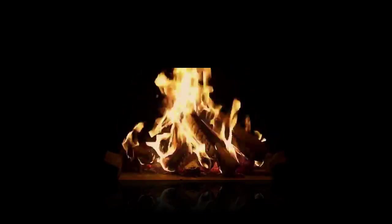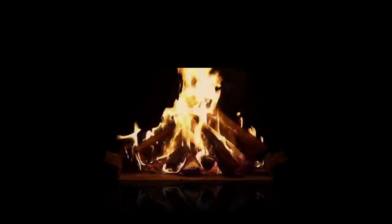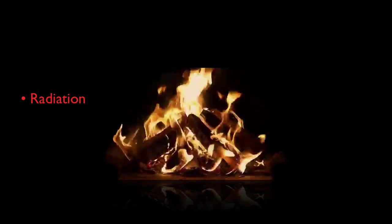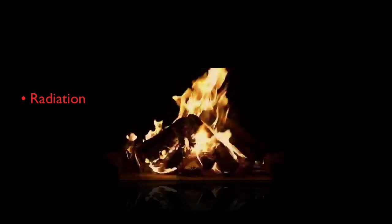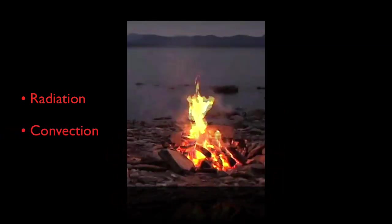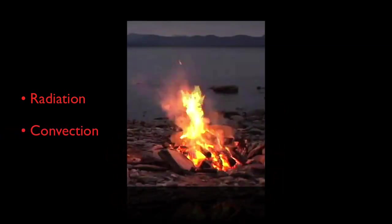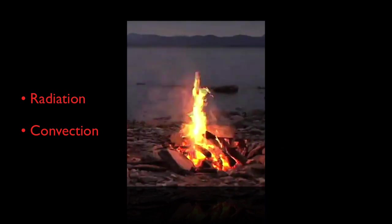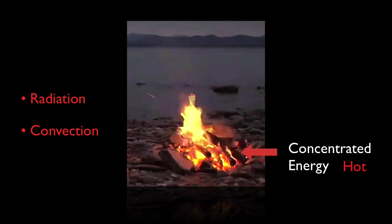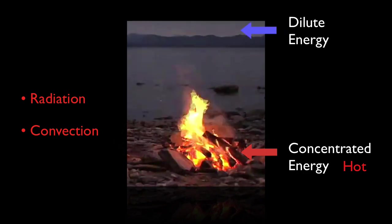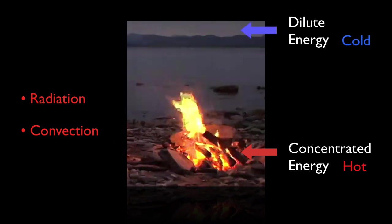It spreads outward by a number of different means. There's radiation that includes the visible light of the campfire, as well as infrared, which you feel as heat. Air warmed by the fire also leaves the fire by convection. That includes the smoke, which we see rising into the air — away from where the energy is concentrated within the embers, to where it's dilute, to the colder sky above.